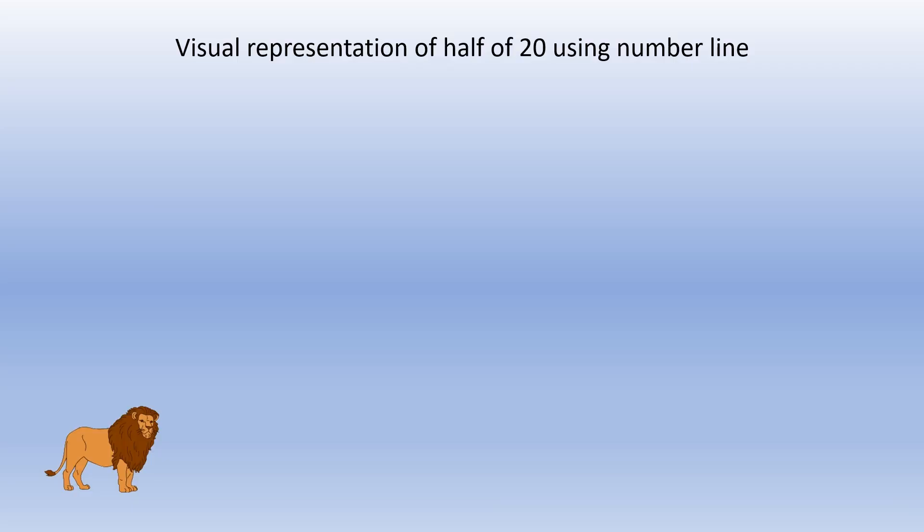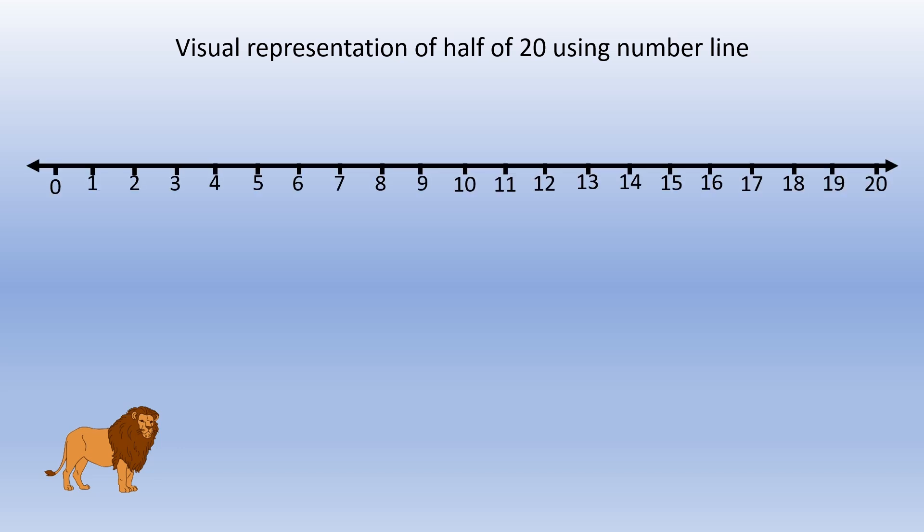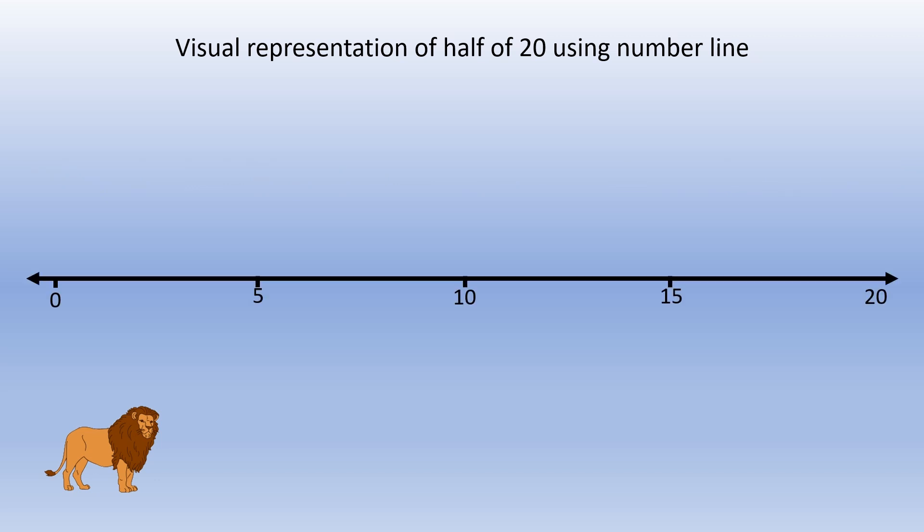Next is visual representation of half of 20 using number line. This topic we have done in unit fraction of a whole number. We have a number line here marked from 0 to 20. Let us take only number 0, 5, 10, 15, 20. Now as you can see from the number line, 10 is equidistant from 0 and 20. So half of 20 is equal to 1 by 2 times 20, which is equal to 10.